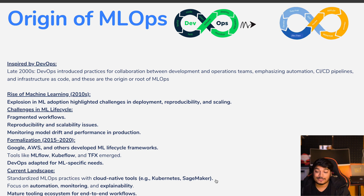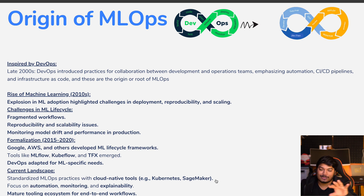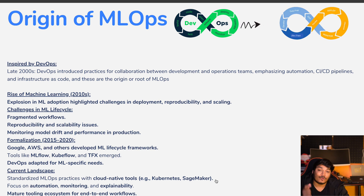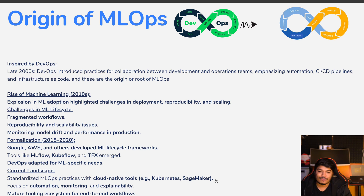DevOps also evolved specifically for ML because they found they needed to continuously train models, continuously test models, and continuously generate metrics. As for the current landscape, we saw standardization of MLOps practices with cloud-native tools like Kubeflow and SageMaker, a focus on automation, monitoring, and explainability, and the tooling ecosystem has evolved a lot.